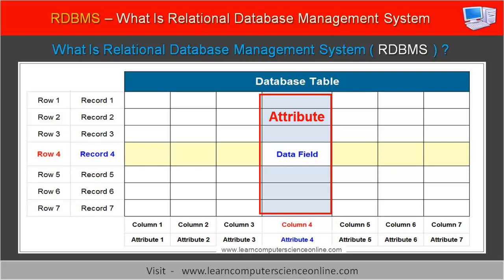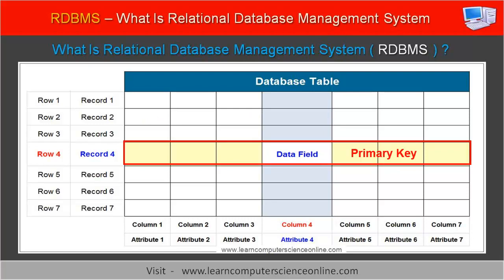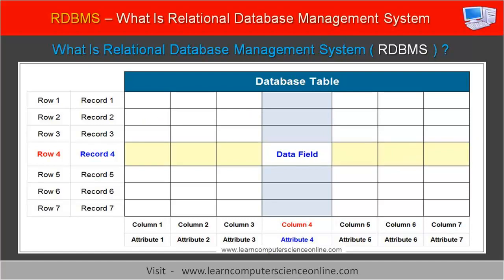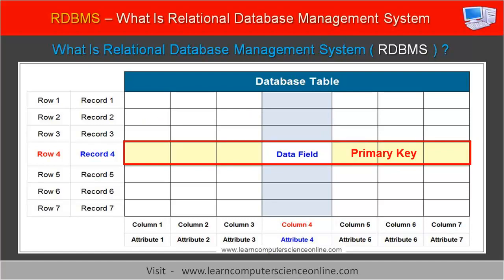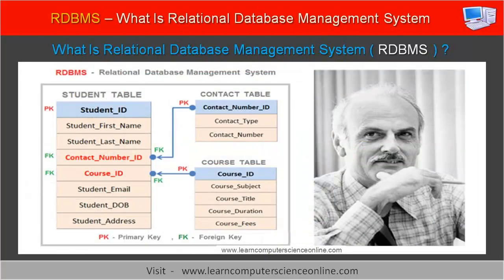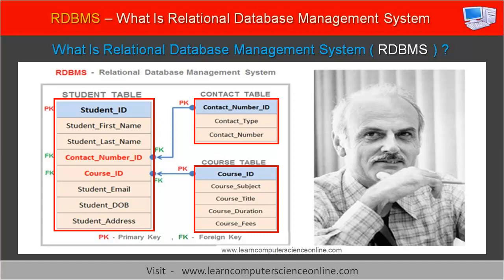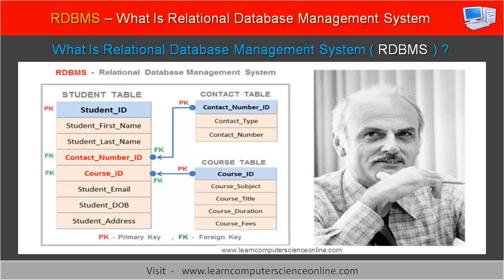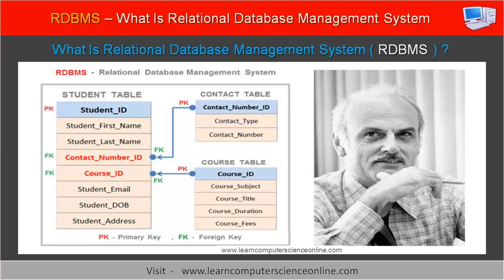The columns in a table represent an attribute for an entity. Each table column is identified with a unique name, whereas each row in the table is uniquely identified with the help of a database key called the primary key. In relational databases, the relationships between the tables are defined by using a primary key and the foreign key.